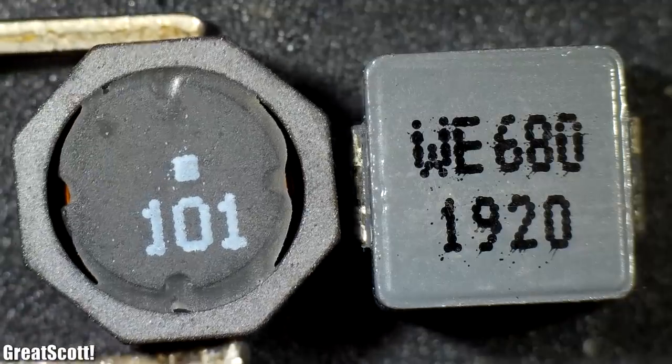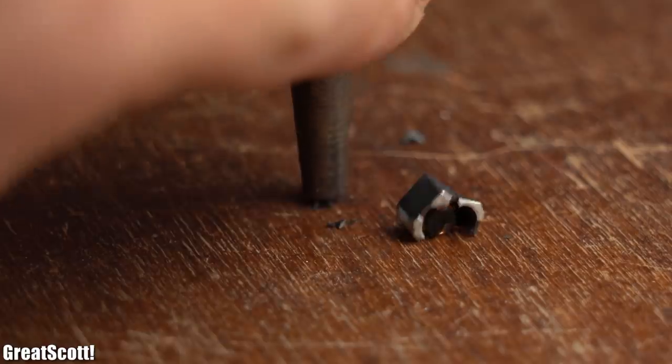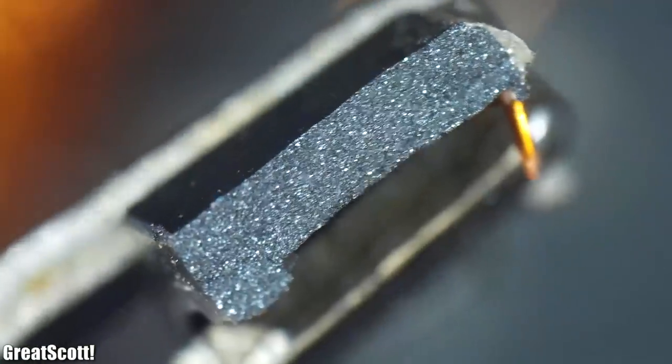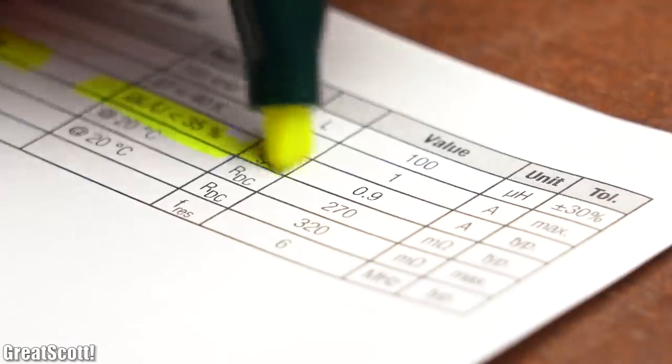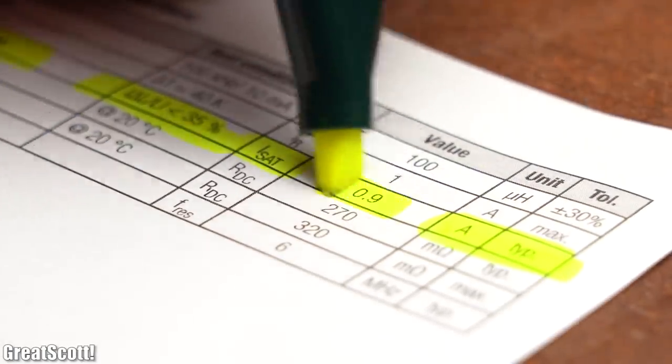Therefore you can see that at a similar coil size, the choice of the core material can be more important than the actual inductance value. And you should always have a look at the magnetic saturation current and not exceed it.